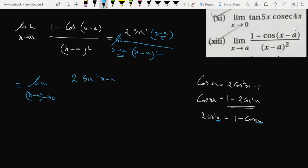So 2 sine square x minus a by 2 will follow. X minus a by 2, this square, this 2 will become 4 when the bracket opens. 2 became 4, and we have to adjust it with a 4.